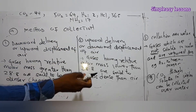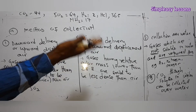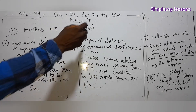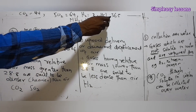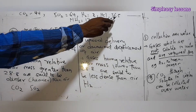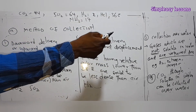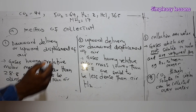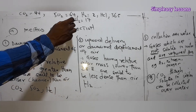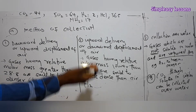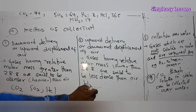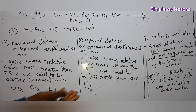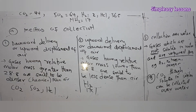Hydrogen, H₂, has a molar mass of 2, which is less than 28.8, so it floats — upward delivery. For HCl: hydrogen is 1, chlorine is 35.5, giving a molar mass of 36.5. Since 36.5 is greater than 28.8, HCl is heavier than air — downward delivery. These are examples of gases collected by downward delivery and upward delivery.